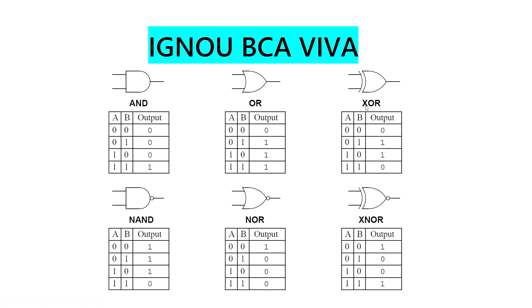XOR is exclusive OR. Exclusive OR means that if only one input is 1, then output is 1; otherwise 0 comes. NAND gate: N means NOT, so it is NOT AND. The AND gate output will be flipped: 0,0 → 1; 0,1 → 1; 1,0 → 1; 1,1 → 0. NOR gate is OR output flipped. XNOR gate is XOR output flipped: 1,0,0,1.